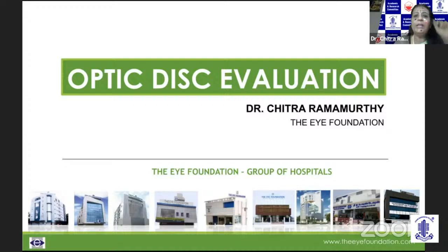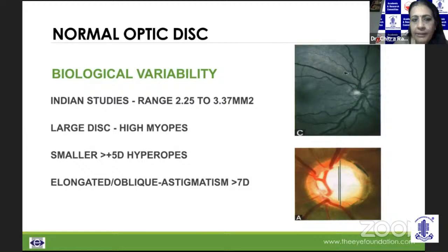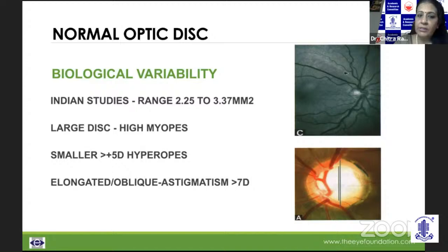As we all know, optic disc evaluation is a very critical discriminant in diagnosing glaucoma. But we need to remain cognizant of the fact that there are biological variabilities. Different Indian studies have shown that disc size could range anything from 2.25 to 3.36 millimeter square. We cannot get complacent in high myopes — we need to be suspicious.